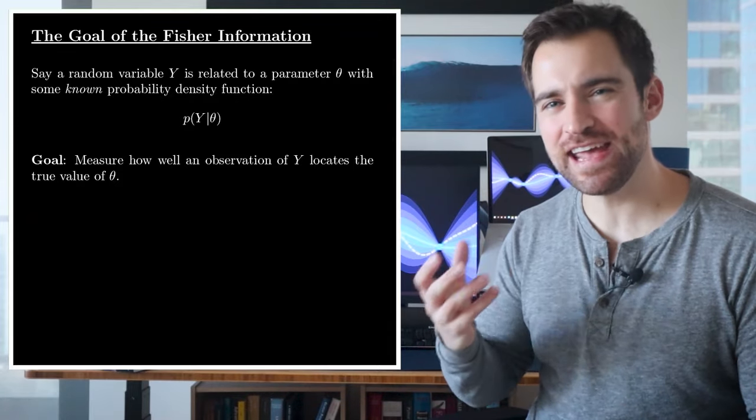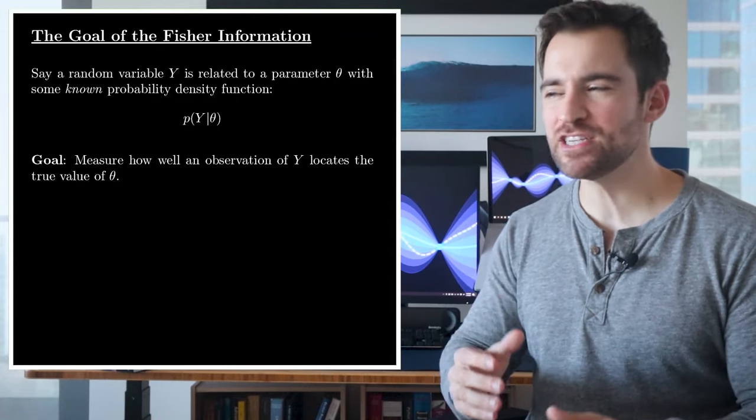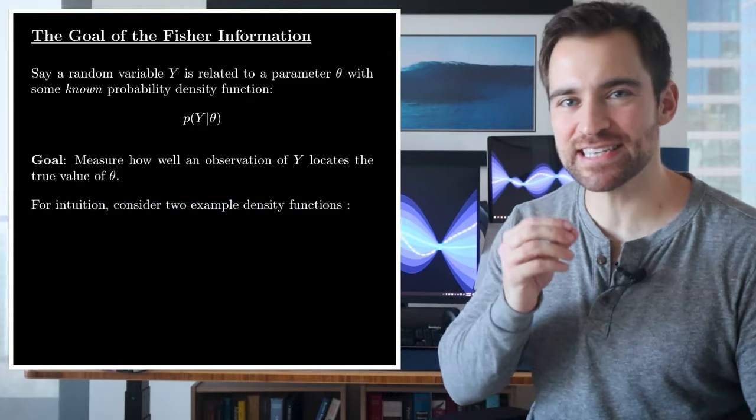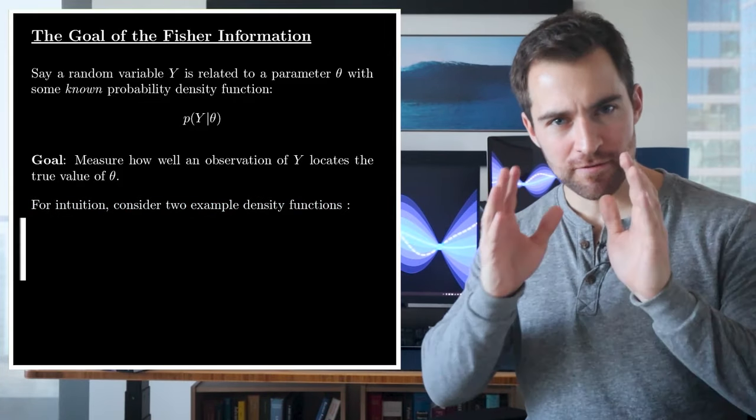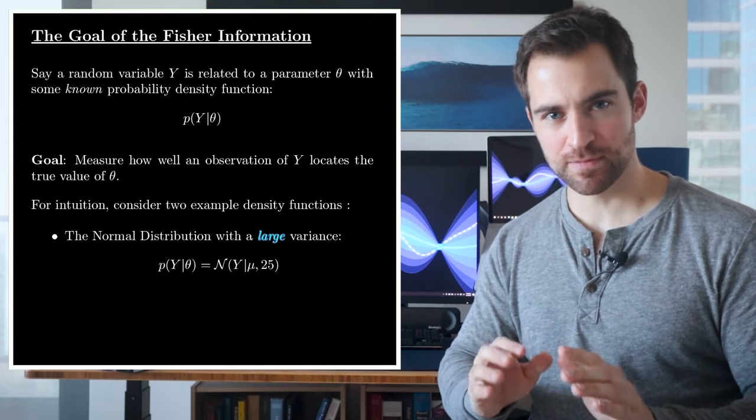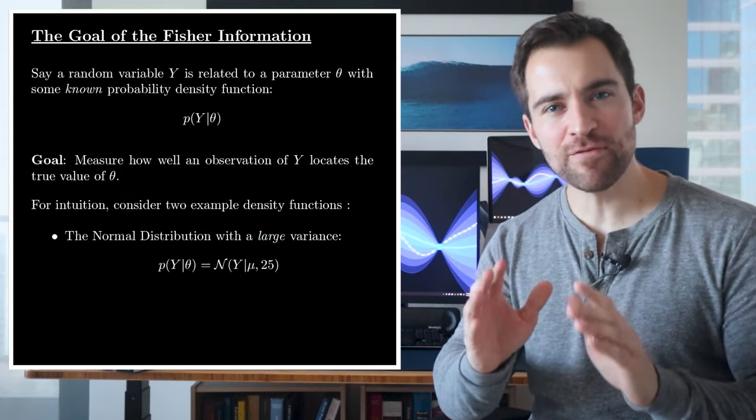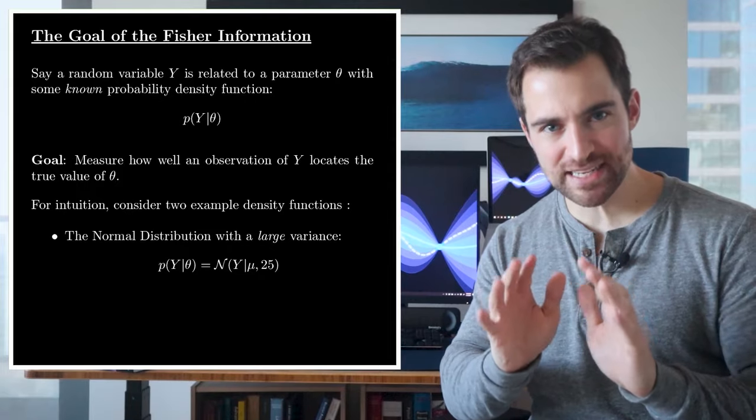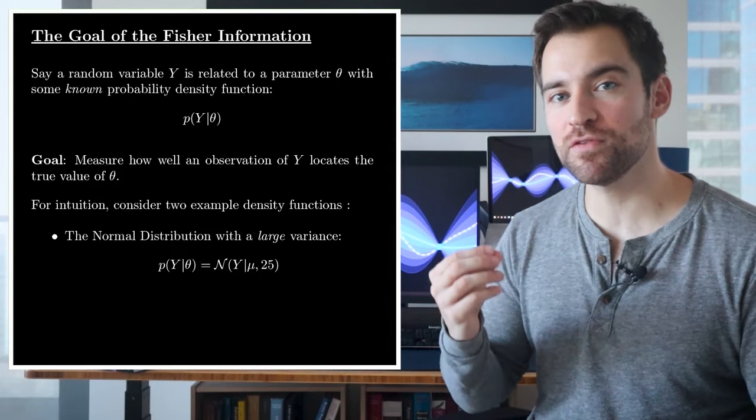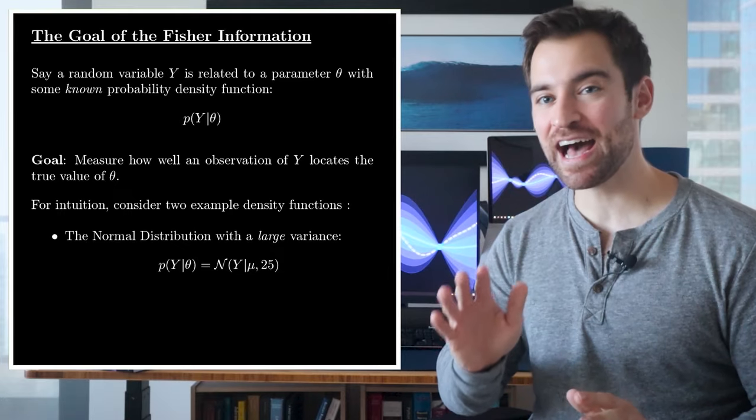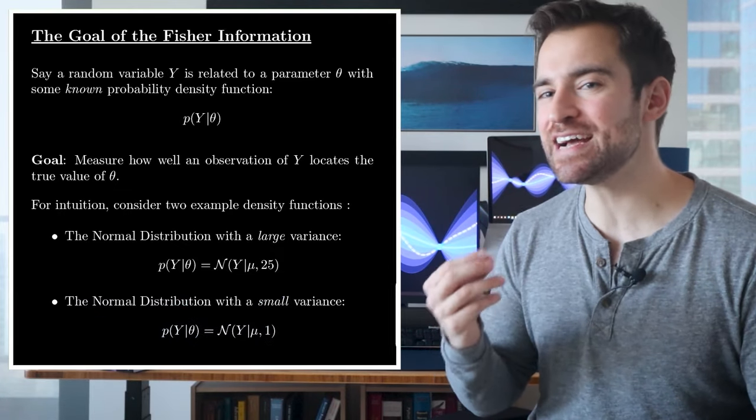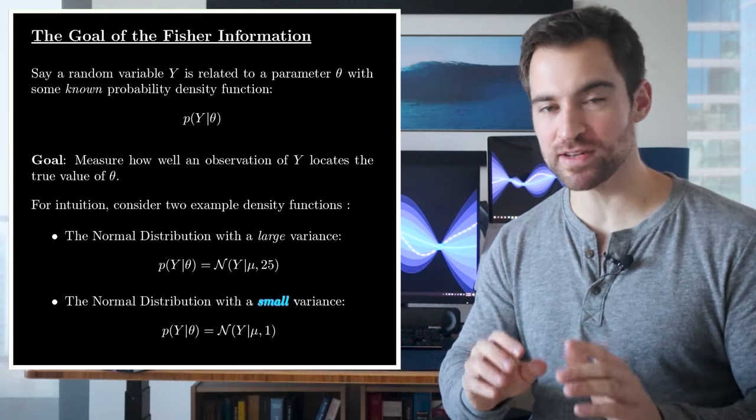According to whatever this thing is, how well does an observation of y locate the parameter value that produced it? In fact, the goal is to measure how well an observation locates that parameter. Now, if you're like me, the vagueness of this goal makes it hard to imagine what a solution would even look like. But what does help me is to consider cases at two extremes.